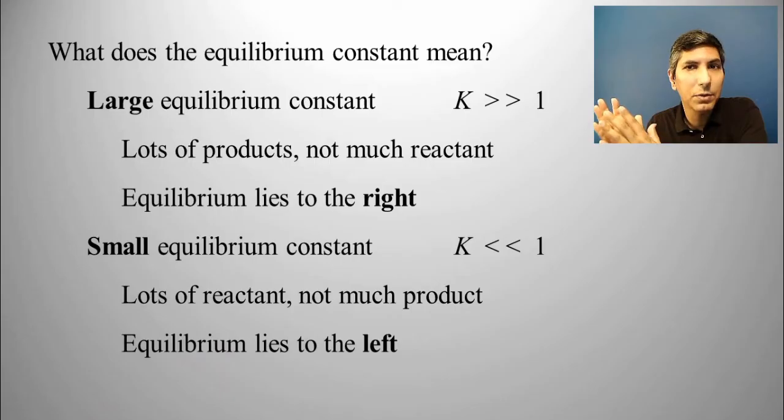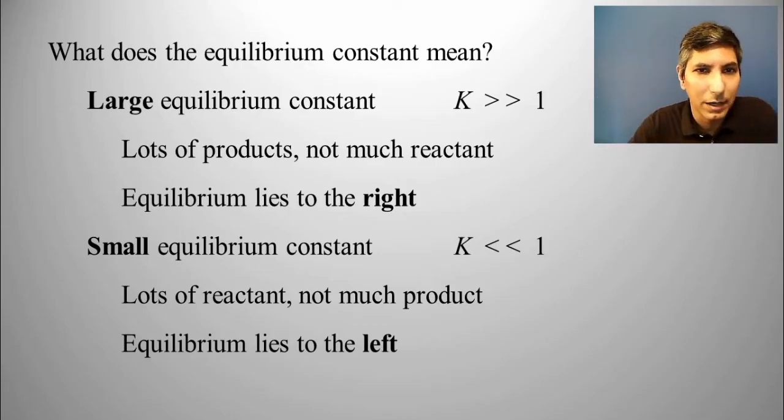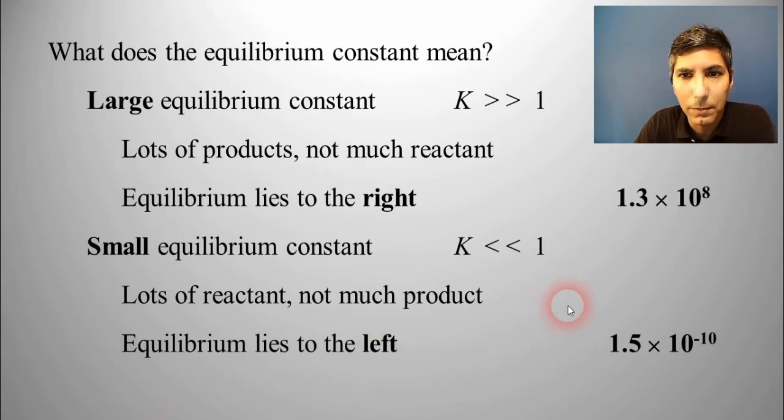And hopefully that makes sense because when you write a balanced equation, you always write the reactants on the left side of the arrow. So that denotes that you have a lot of reactants, not much product.